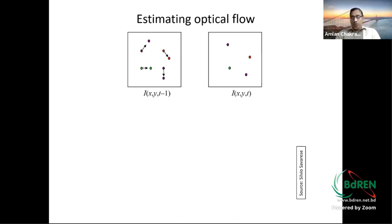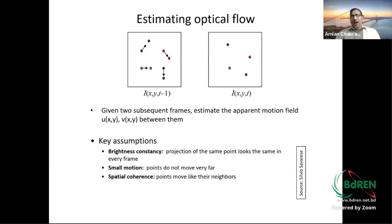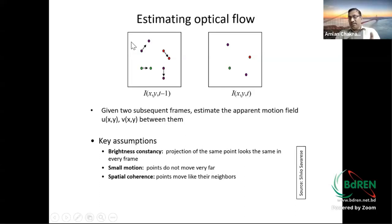However, information doesn't always change due to actual object motion. Object information can change because of a change in brightness — if frame t-1 is captured in one brightness condition and frame t in another, the network may detect a change even though the object hasn't moved.